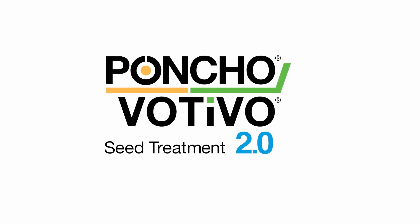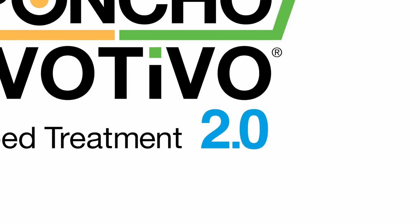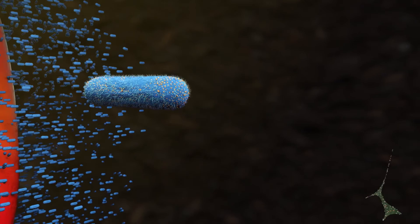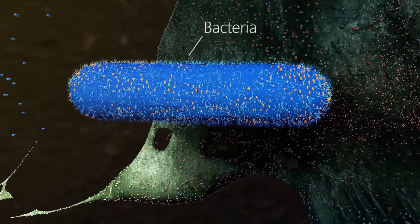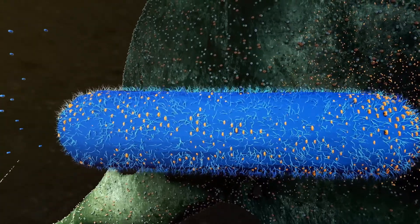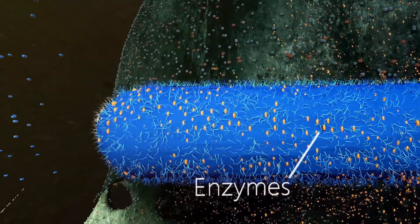The third component of Poncho Votivo 2.0 is a revolutionary bacteria that increases native microbial activity around the root. The 2.0 bacteria spore moves into the soil, delivering endoglucanase enzymes.